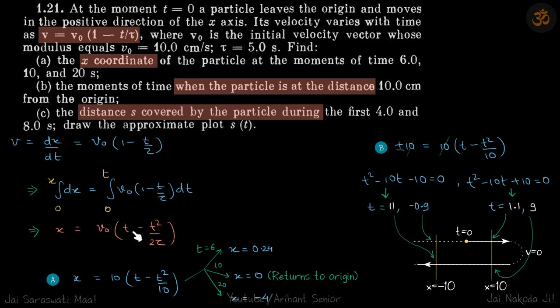This is the position at a given time. If you put these values here—6, 10, and 20—you will get the positions of the particle at those times. Here you can see that the position is again 0, so it returns to origin. Why returns? Because at t equals 0, also x is 0.